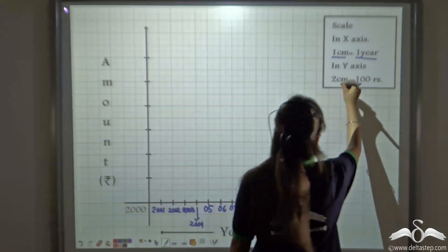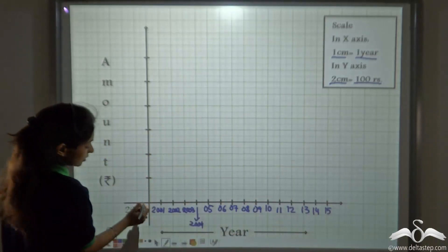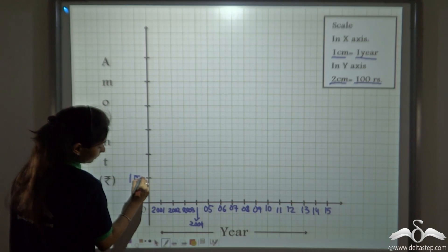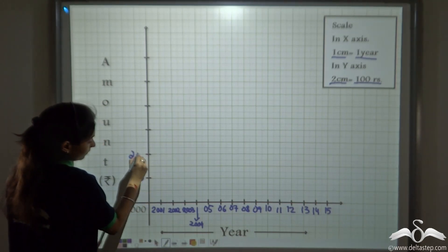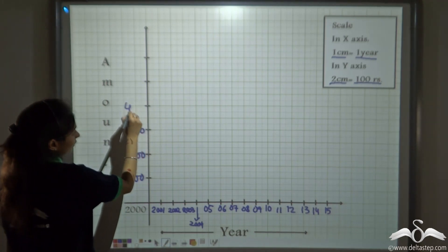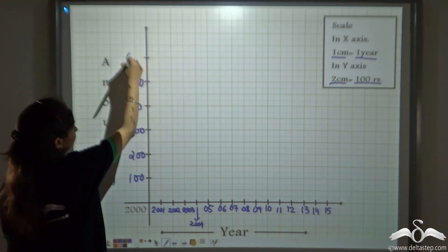And see what we have taken in y-axis, two centimeter is hundred rupees. So this is one and two, two centimeter, this is hundred, two hundred, three hundred, four hundred, five hundred and six hundred.